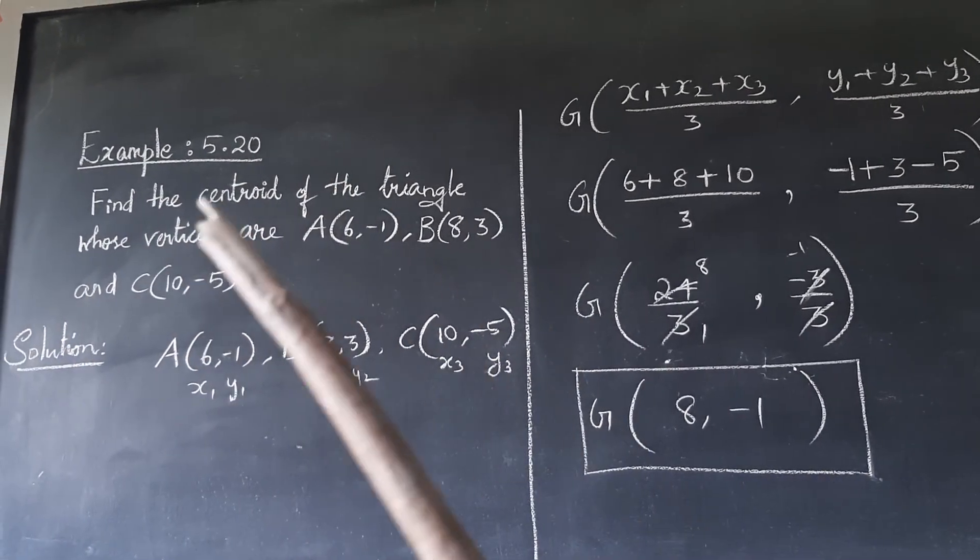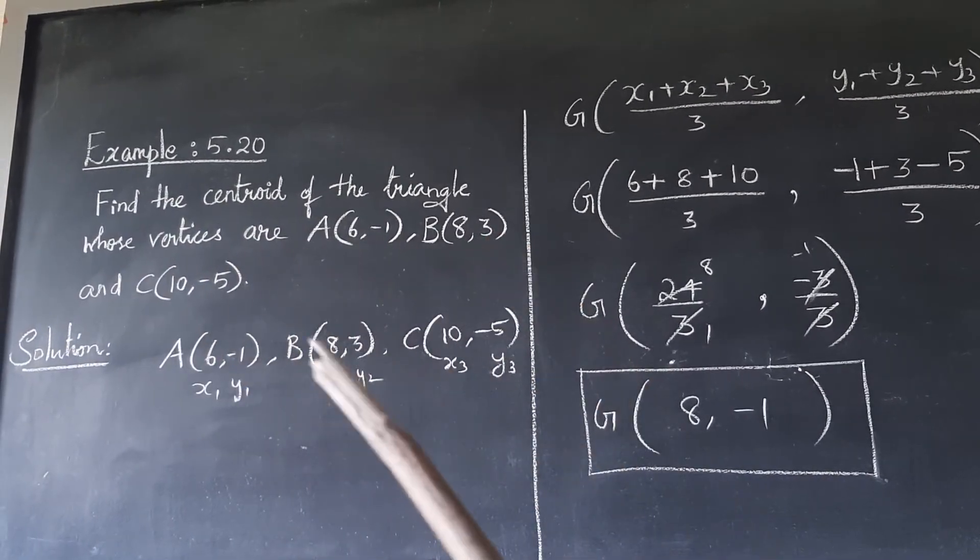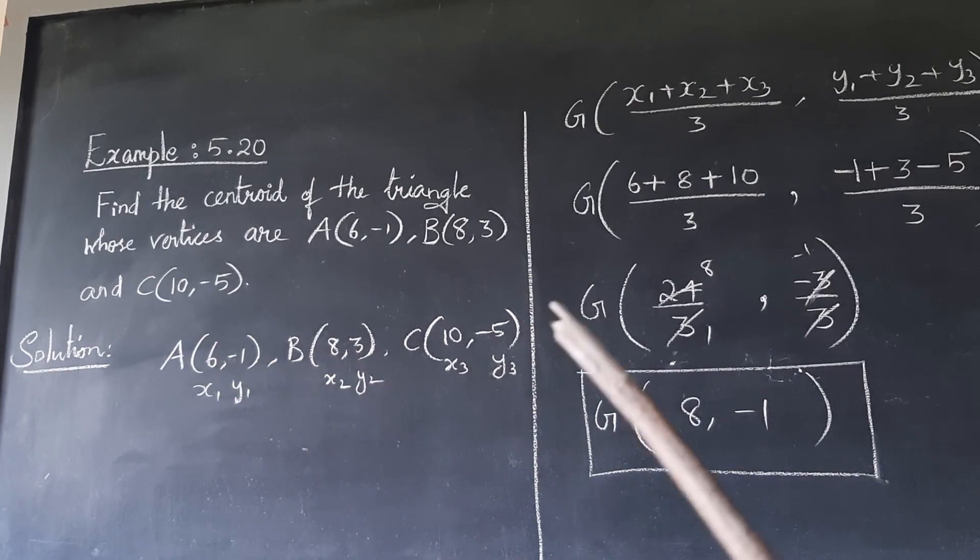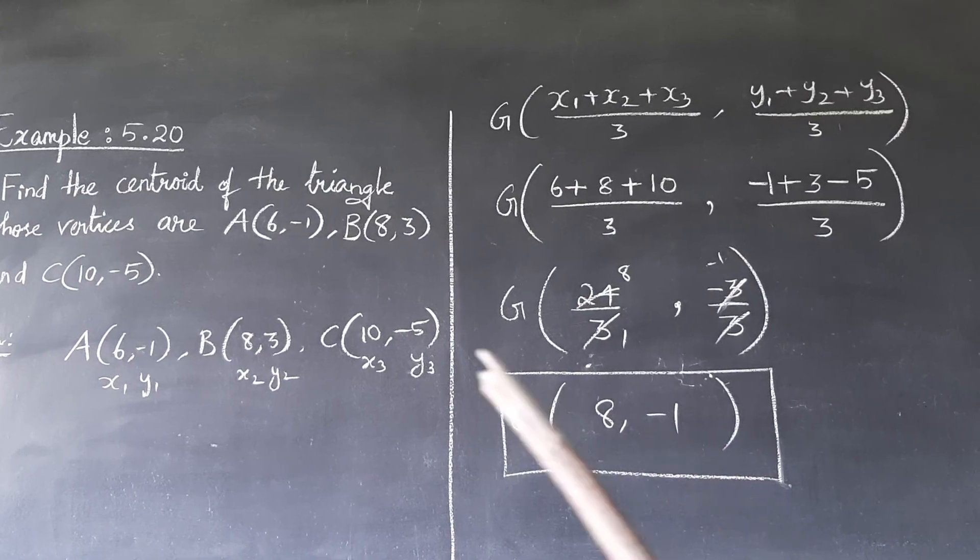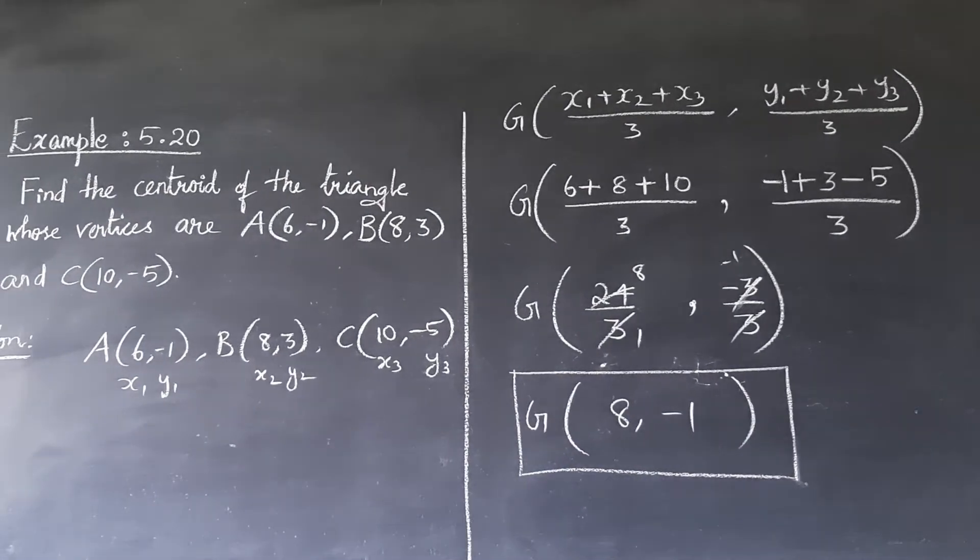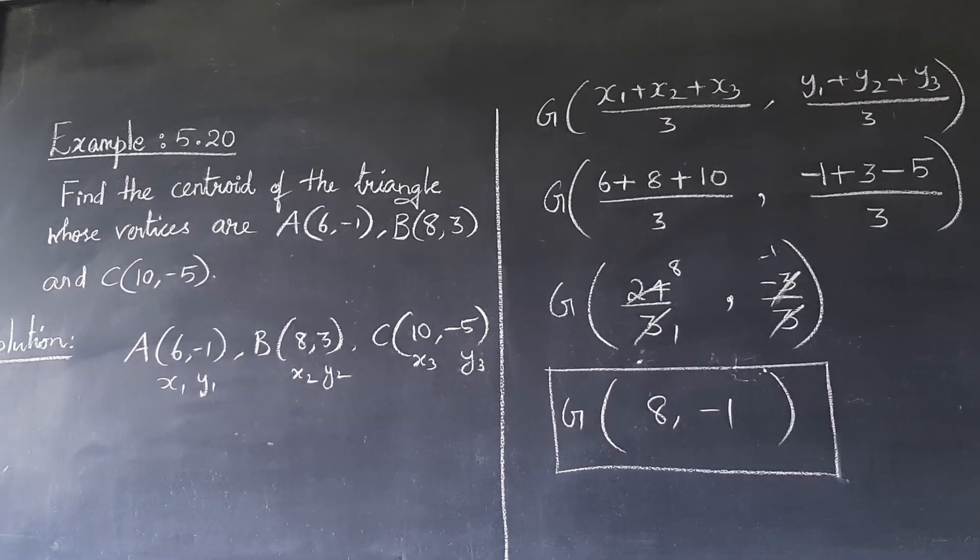Find the centroid of the triangle whose vertices are A, B, C given. So it's very simple. Three points - substitute in the formula and you get the answer. That's all. Okay children. So watch the video twice and do the homework sums. Thank you.